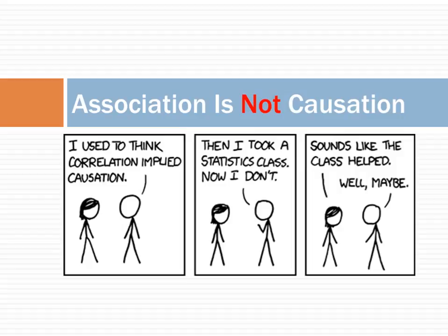In this cartoon, we see report of association between a statistics class and knowledge of cause and effect. We see sequence. The person did not know that association is not causation before the class. We can imagine a mechanism. The professor taught it and the student learned it. It is not stated, but it is implied.